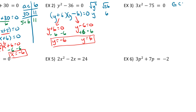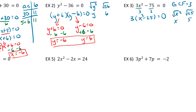But notice we actually have a GCF of 3 in this case. So the first thing we do is factor out the 3, giving us 3 times x squared minus 25 equals 0. Now we can do the difference of squares: the square root of x squared is x, and the square root of 25 is 5. So we get 3 times x plus 5 times x minus 5 equals 0. For this constant factor of 3, we get 3 equals 0, which doesn't make sense, so we just throw it out.